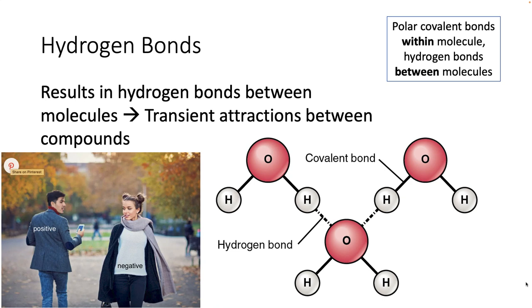It's just a little attraction between two different molecules. So each of these is its own molecule that has its own really, really strong covalent bond sharing electrons. But because of the polar nature of this bond, because oxygen is such an electron hog, we have created slight partial charges that cause these transient attractions.